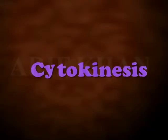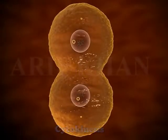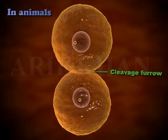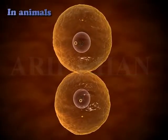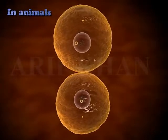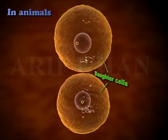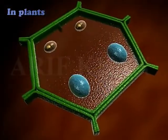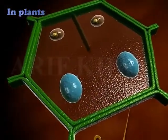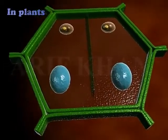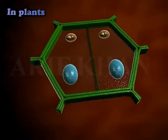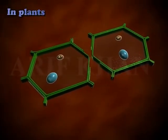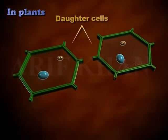Cytokinesis. Cytokinesis is the partition of the cytoplasm. In animals, a cleavage furrow appears in the plasma membrane, which deepens and divides the cytoplasm into two daughter cells, each containing a nucleus. In plants, new cell wall formation is triggered at the center of the cell by the formation of a cell plate. The cell plate grows outwards till it meets the existing wall, resulting in two daughter cells.